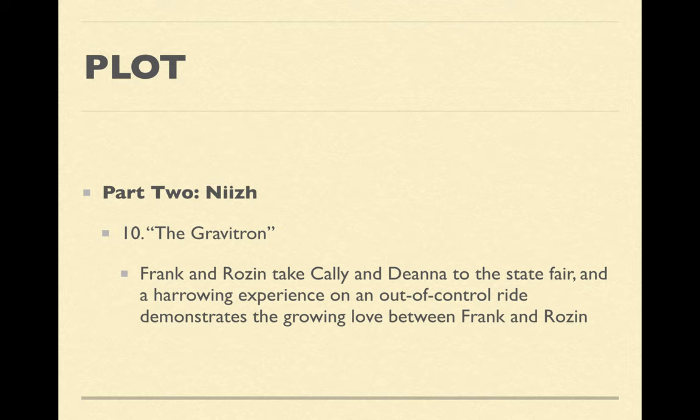I want to finish with a summary of the second half's plot and then spend most of this lecture looking at passages for evidence of the novel's themes. We left off with chapter nine. The novel is divided into four parts with continuous chapter numbering. The names of each part are Ojibwe words for numbers. It's a very multilingual novel — there's a lot of Ojibwe words and concepts, as well as some European languages, particularly German.